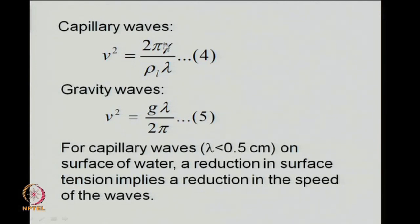If we have a monolayer, the surface tension γ drops, and therefore the velocity of capillary waves is less. Clean water will have higher velocities; monolayer-covered water will display lesser velocities. I would like you to think about this before we meet next time after the exams — consider how the monolayer is affecting the speed of the wave. The hint I will give is the surface compressional modulus, C_s inverse. We will stop here.